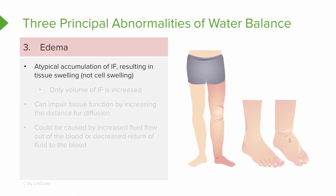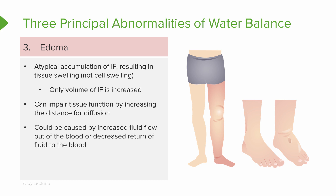The third disorder of water balance is edema. This is an atypical accumulation of interstitial fluid, resulting in the swelling of our tissues. Note that this is not the swelling of cells seen with water intoxication — only the volume of the interstitial fluid is increased, not the other compartments. This can impair tissue function by increasing the distance for diffusion of oxygen and nutrients from the blood into the cells, and increasing the distance between cells and the blood capillaries. Edema can be caused by increased fluid flow out of the blood or decreased return of fluid back into the blood.